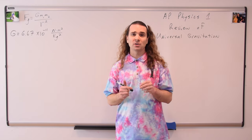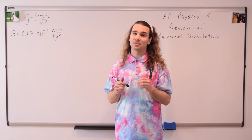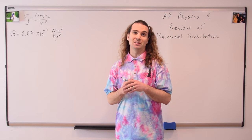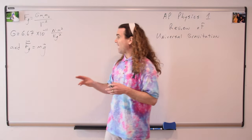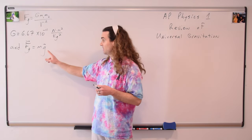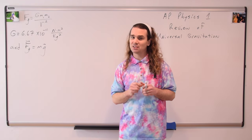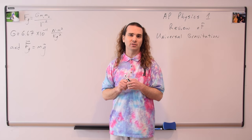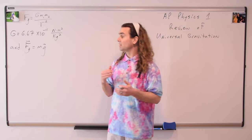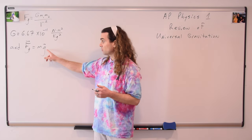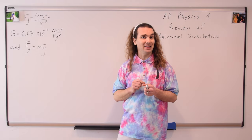Now that we have two different equations for the force of gravity, let's make sure we understand the difference between the two. The force of gravity equals the mass of the object times the acceleration due to gravity — this is a planet-specific equation. We just need to know, or be able to figure out, the acceleration due to gravity, little g, on the surface of that planet.